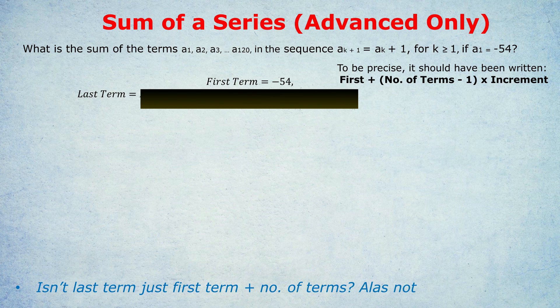All you do, like in this sequence, we know there's 120 terms. All you do is the first term, which is minus 54 in this case, plus the number of terms, which is 120, take away one. Now, some of you won't even need this formula to work out the last term, so I don't want to overcomplicate things. This is just for those who like to have a very solid, methodical approach to these questions.